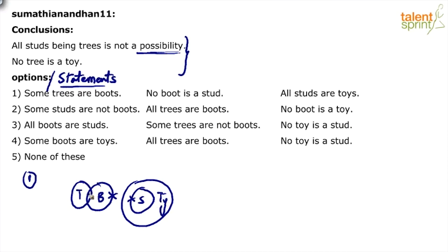Now verify the conclusions from option one. I know from experience that conclusion two does not satisfy this diagram, so I can immediately eliminate option one. Let me show you how. Look at conclusion two first - forget about conclusion one. The conclusion is: no tree is a toy, meaning trees and toys cannot overlap.